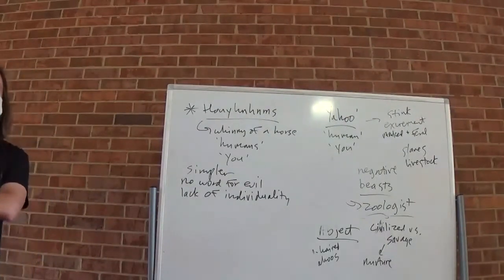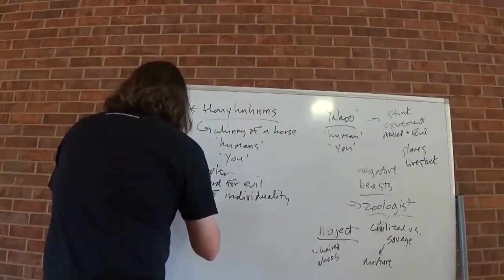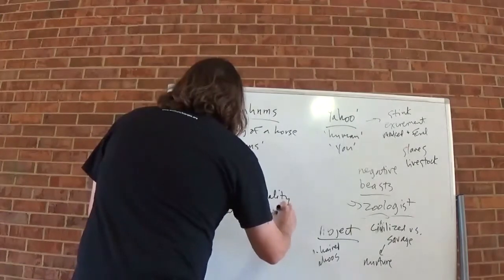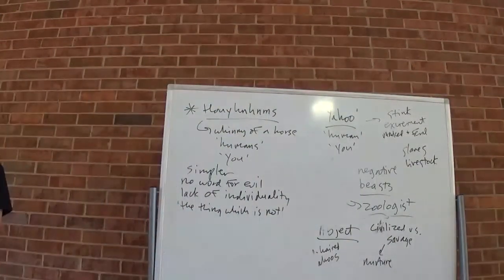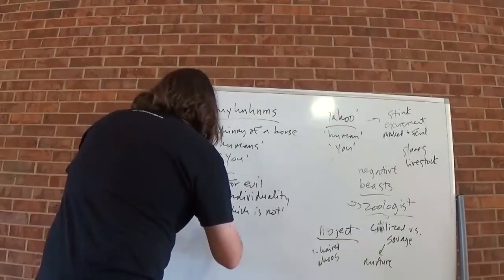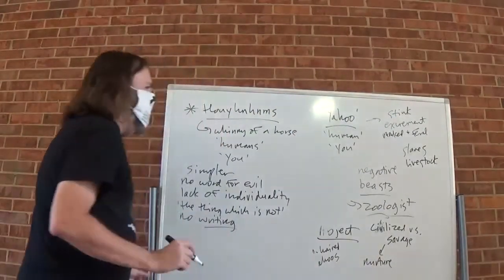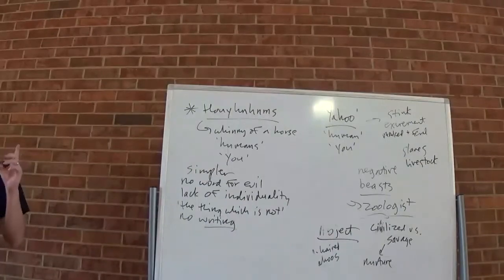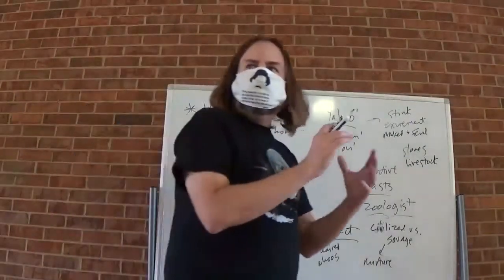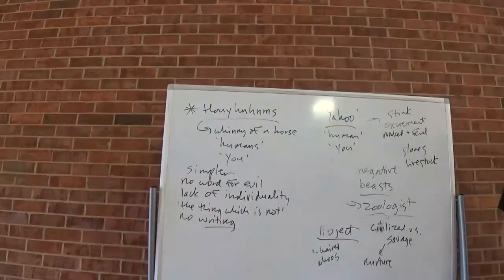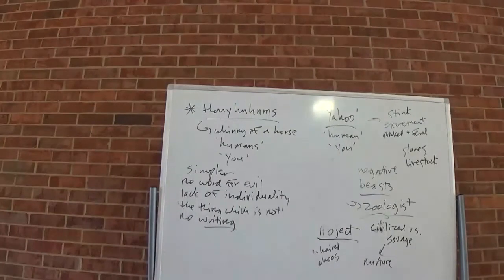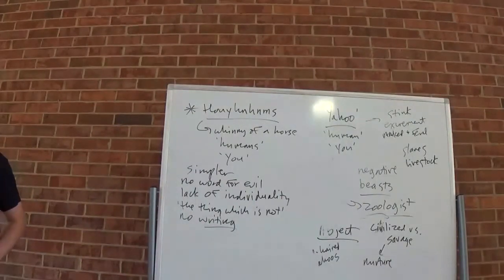Yeah, they don't lie, for one thing. They don't even have a word for it. They say, you've said the thing which is not. They also don't write. We'll try to maybe pull that out in a packet in a minute. They don't write, and the weird thing about the not writing is that it's not because they can't use tools. That's why the servant demonstrates that a Houyhnhnm can thread a needle with their hooves. That they can use their hooves much as humans use their hands. But they do not write.